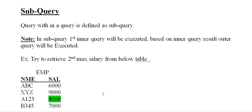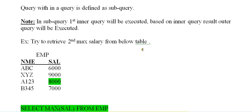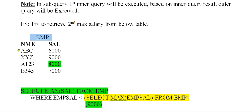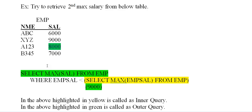Let's see an example to retrieve the second max salary from a table. For example, I have an employee table with two fields — name and salary — and it has four records. I want to extract the top second salary, which would be 8000.